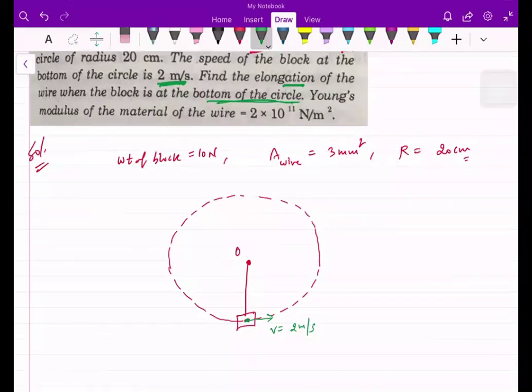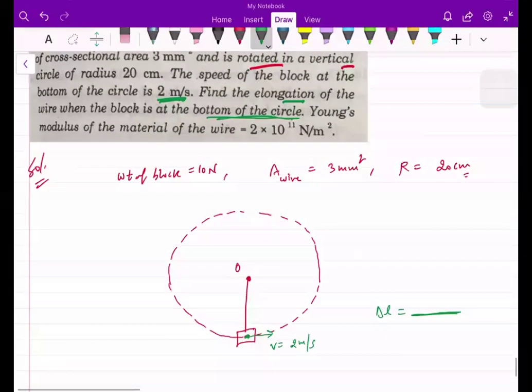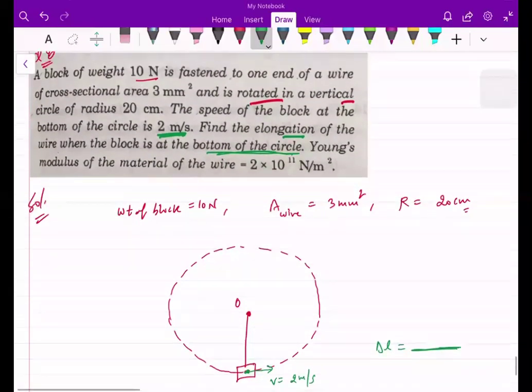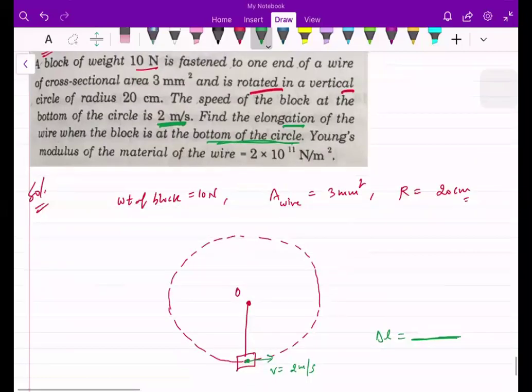The elongation of the wire is the meaning of delta L, and the original length will behave as the radius.